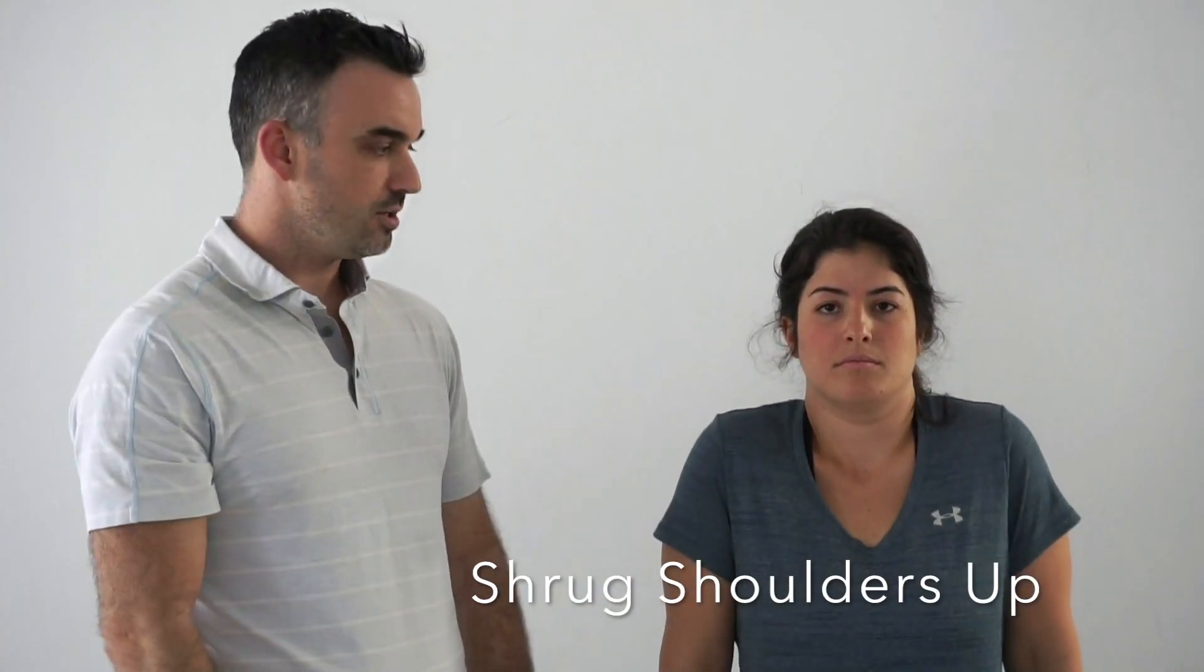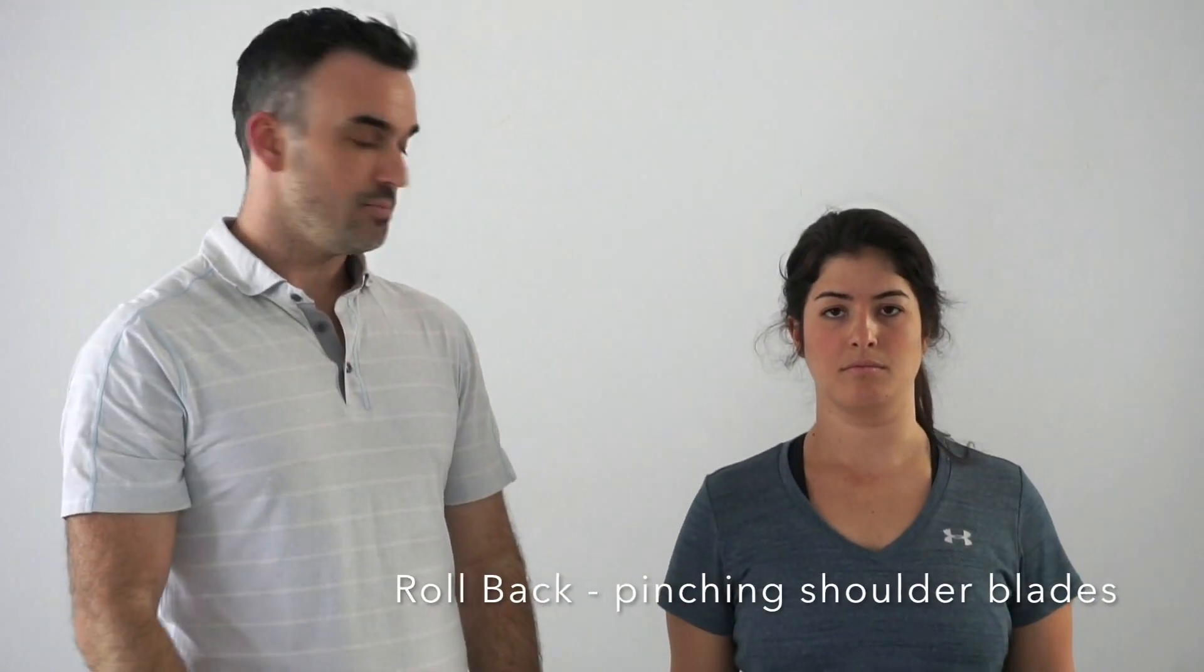So with Michelle here, what we're going to do: she's going to start by shrugging her shoulders straight up. She's going to roll them backwards and then pull her shoulders down towards her back pockets.